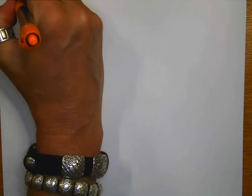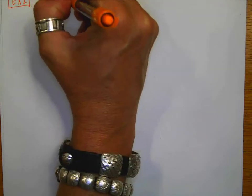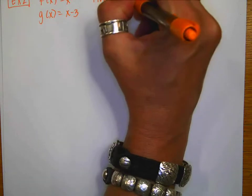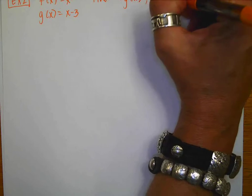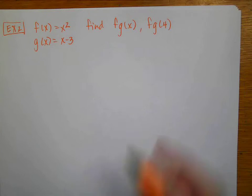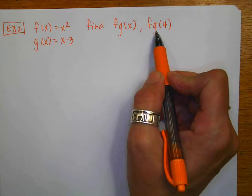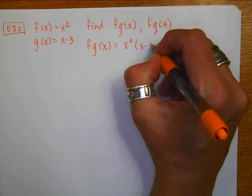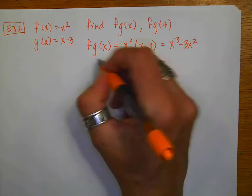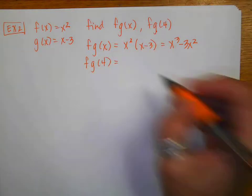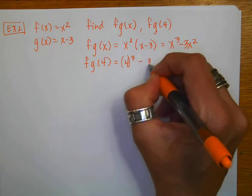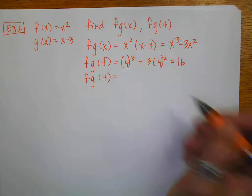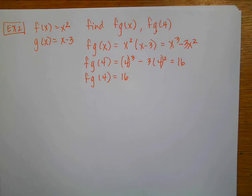For example 2, f(x) = x² and g(x) = x − 3. I want to find (f · g)(x) and then evaluate at 4. So (f · g)(x) = x² · (x − 3) = x³ − 3x². Then (f · g)(4) = 4³ − 3·4² = 64 − 48 = 16.